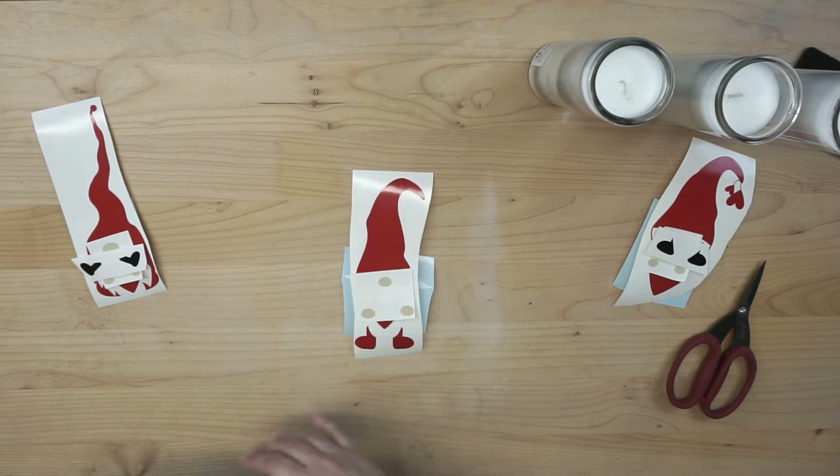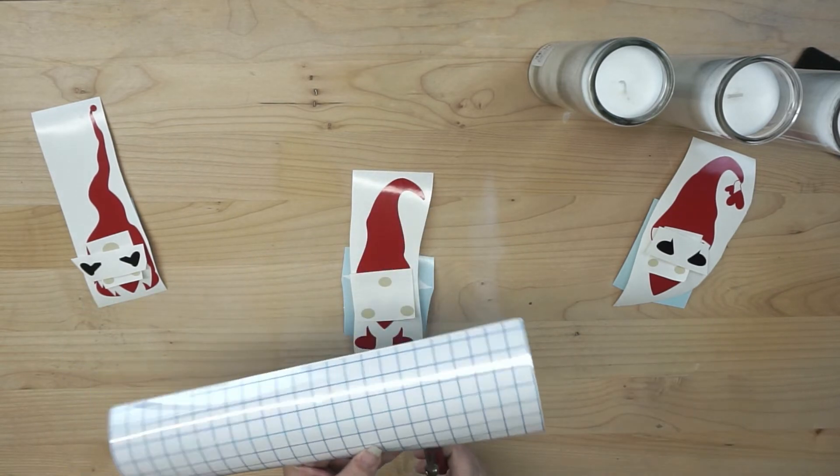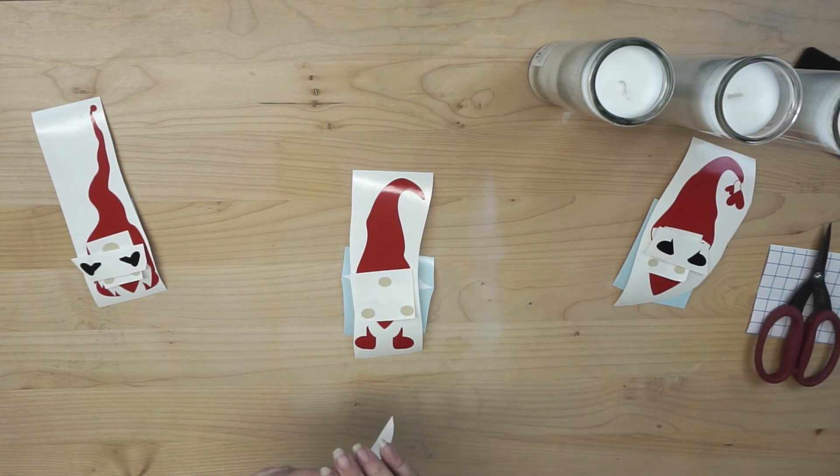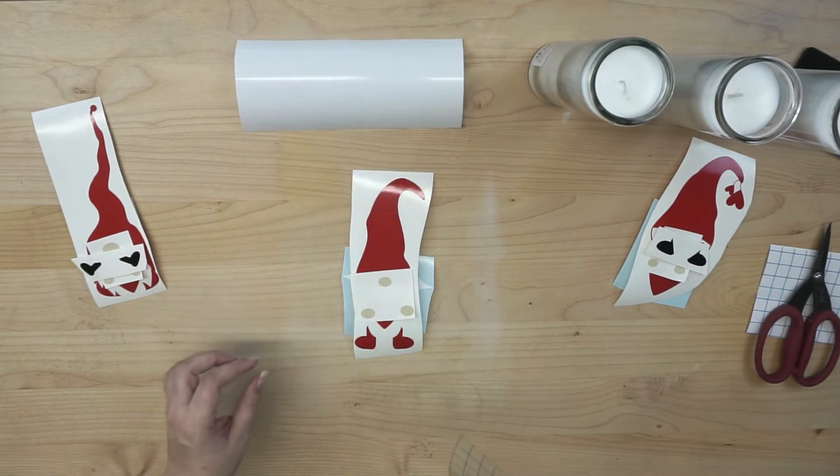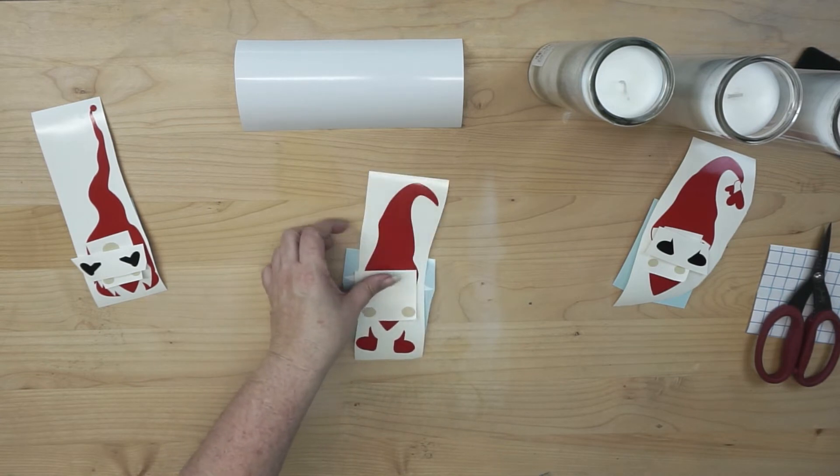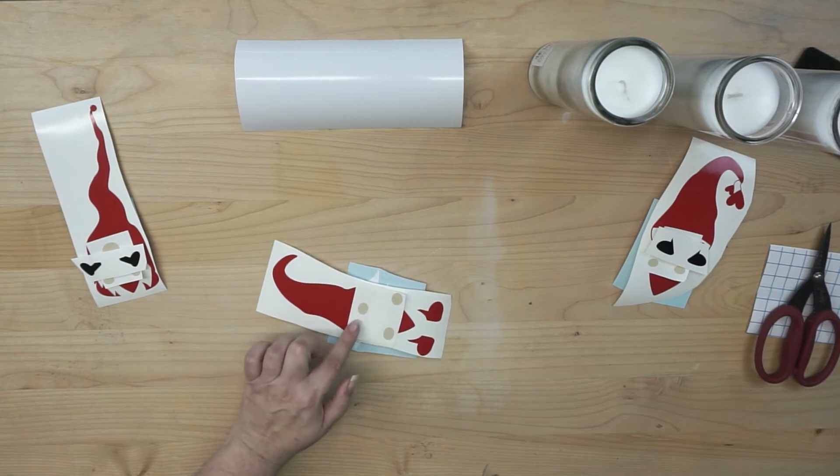And we'll start, we can start with the easiest one. I just want a piece of transfer tape that's going to cover my entire design. Trim off the extra, and you can go ahead and remove it from the backing right there. Now I saved that backing, so that when I'm done, if I want to, I can set the whole finished design on top of it. But what I want to do, is I am going to grab in this order. Because I'm layering from top to bottom.